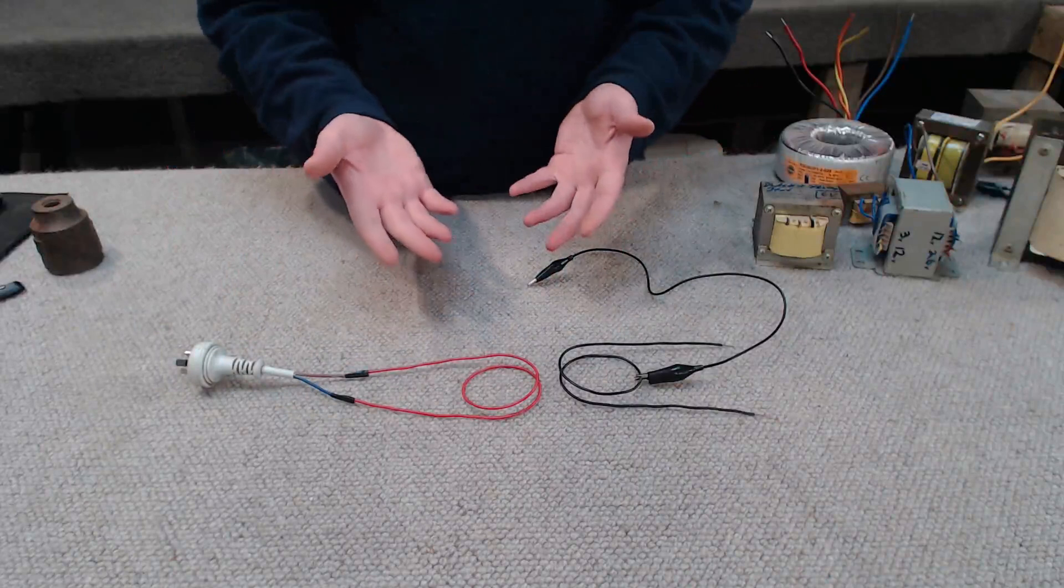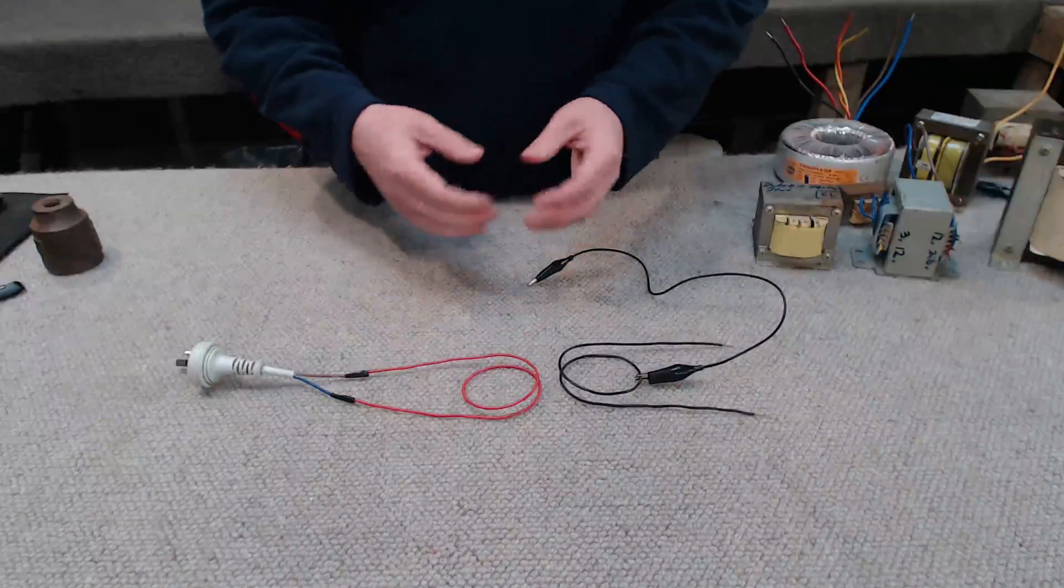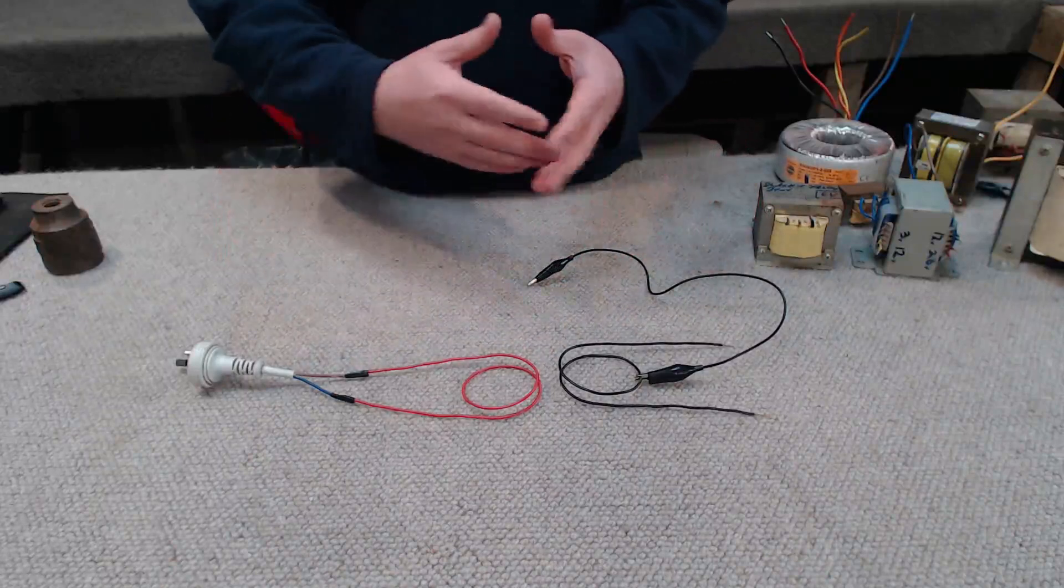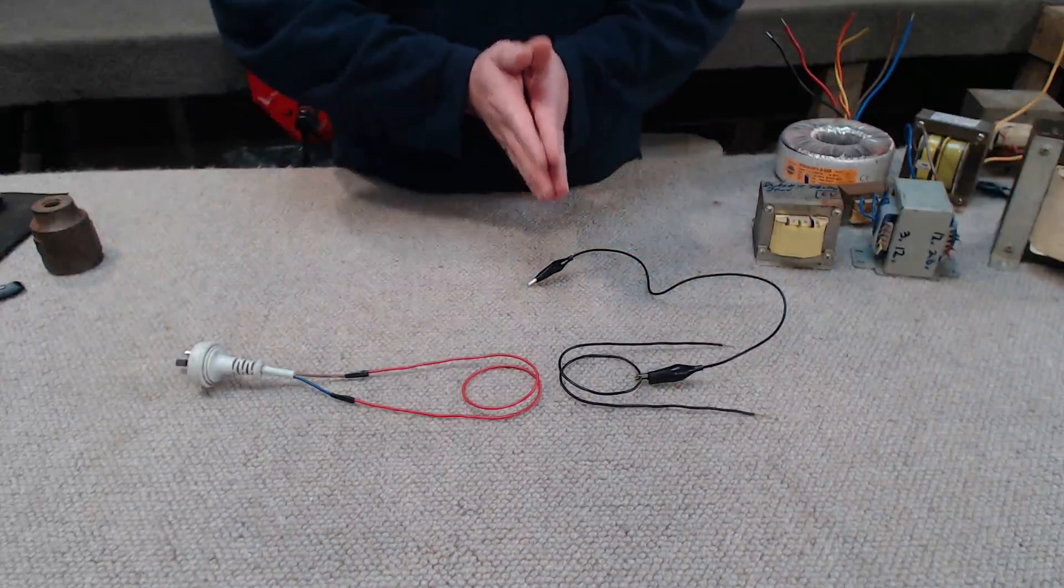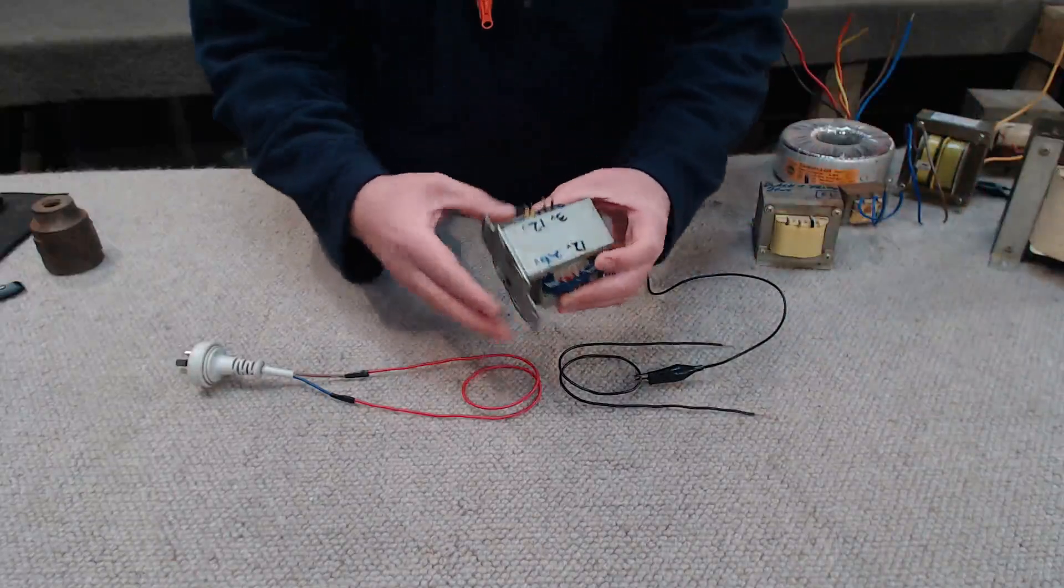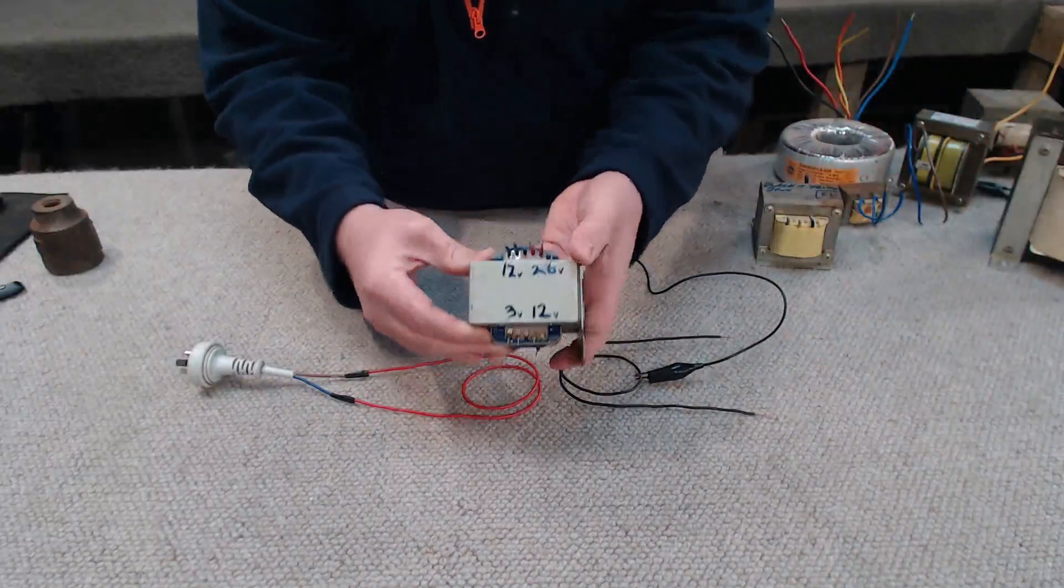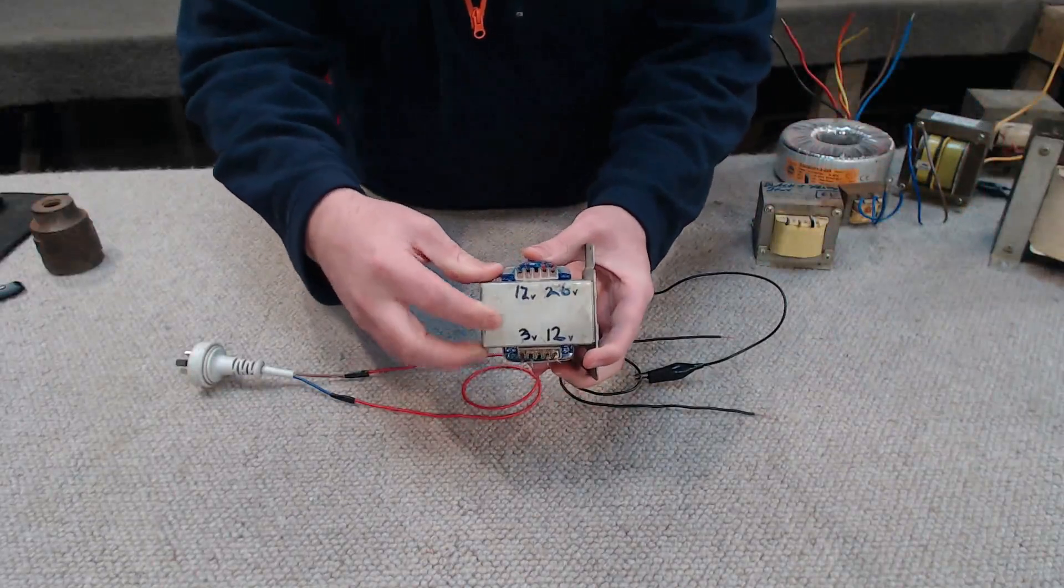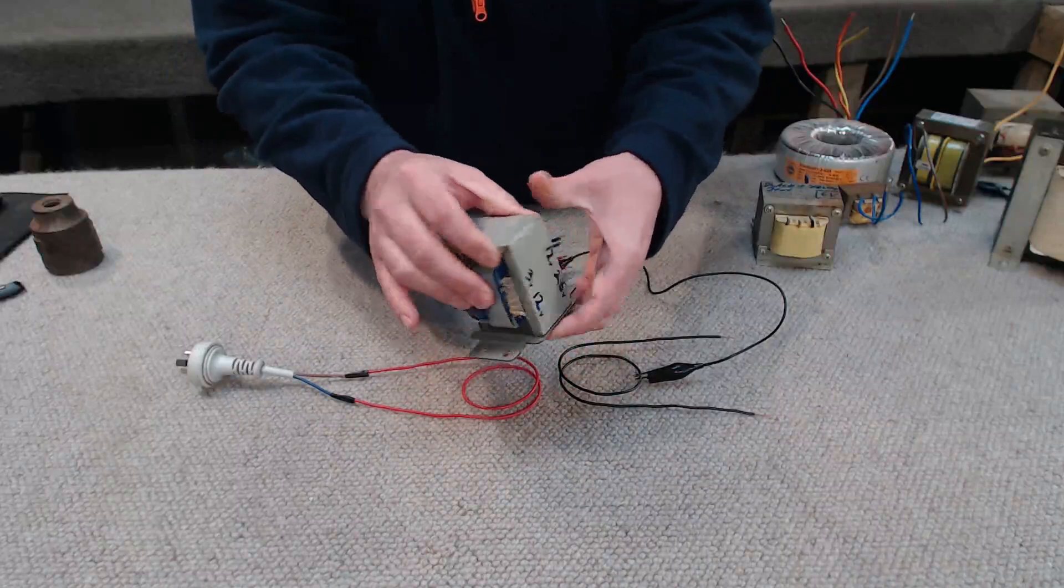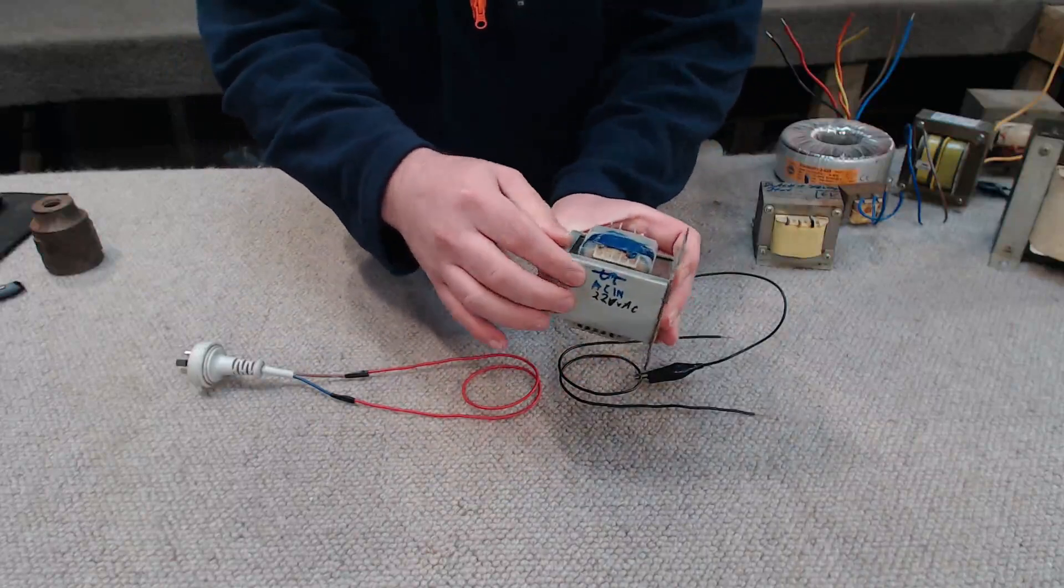Similarly, you can have a transformer that has a multi-tapped secondary so that you have different voltages, different voltage outputs from the one transformer. You can also have a transformer that has multiple secondaries. So in this transformer, we have four individual secondary windings, and we still only have the one primary on this side.